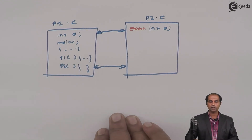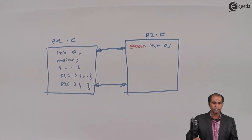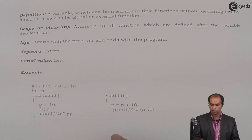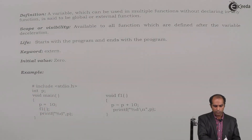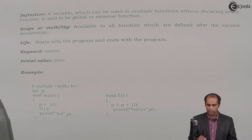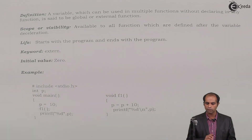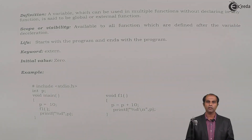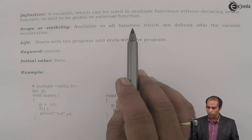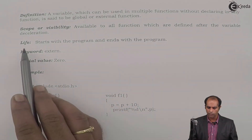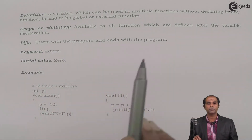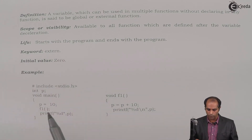Now let's look at the formal definitions for the global variable. A variable which can be used in multiple functions without declaring it in any of those functions is said to be a global or external variable. Scope or visibility: available to all functions defined after the variable declaration. Life: starts with the program and ends with the program. Keyword: extern. Initial value: zero.